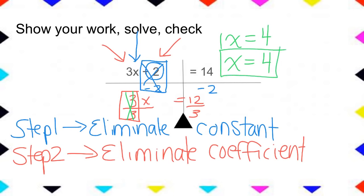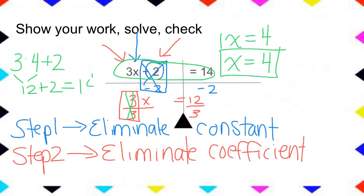Now I think that's the answer, but let's go back and plug it in. Here is my original equation: three times X, but I think X is four, plus two. That's 12. 12 plus two is indeed 14. It checks out — we have the right answer.